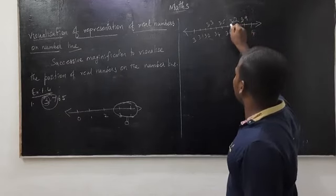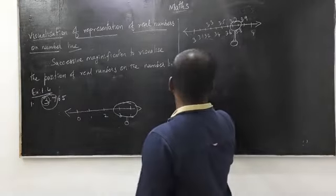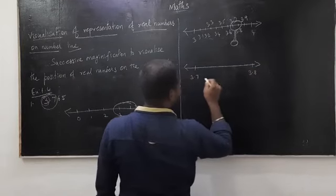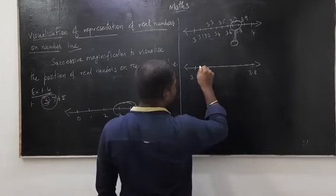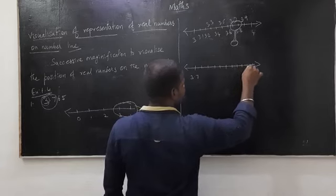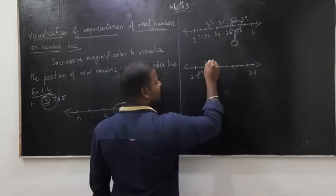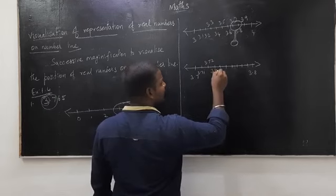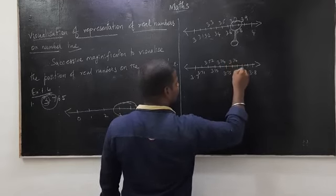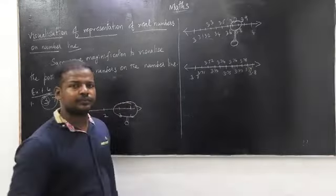The next decimal digit is 7, so 3.765 lies between 3.7 and 3.8. Again magnify from 3.7 to 3.8 and classify into 10 equal parts: 3.71, 3.72, 3.73, 3.74, 3.75, 3.76, 3.77, 3.78, 3.79. The next decimal digit is 6, so the value lies between 3.76 and 3.77.